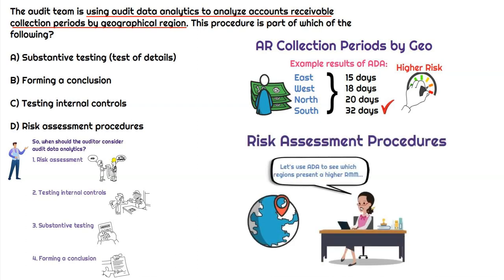Overall, we would do this as part of our risk assessment phase of the audit. The whole point of risk assessment procedures is to see which regions present a higher risk of material misstatement. By understanding which region might present a higher risk, the audit team can use that information to better design or tailor their audit procedures around the potential risk. So the correct answer here is going to be risk assessment procedures.